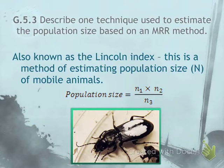Remember that N1 is the number of organisms marked in the first capture, N2 is the number of organisms captured during the second capture, and N3 is the number of organisms captured twice — captured and marked in N1, counted in N2, and they had that mark, so you can tell they had been captured twice.